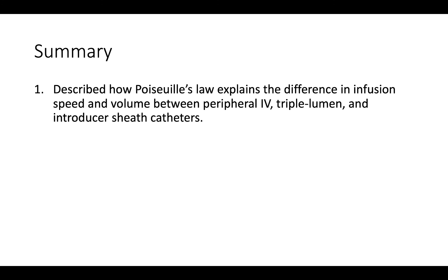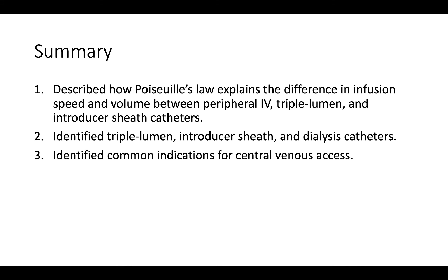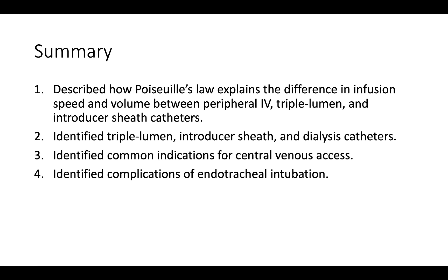In summary, in this session we described how Poiseuille's law explains the difference in infusion speed and volume between peripheral IV, triple lumen, and introducer sheath catheters; identified triple lumen, introducer sheath, and dialysis catheters; identified common indications for central venous access; and reviewed characteristics of endotracheal tubes and complications of endotracheal intubation. Thank you for your participation.